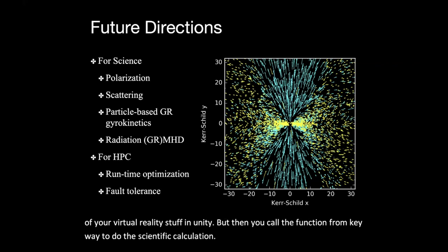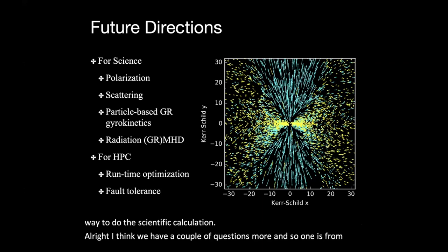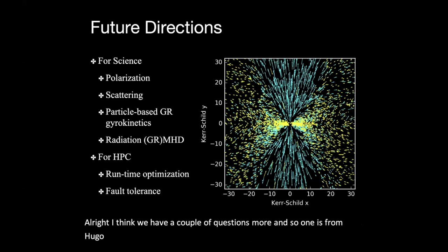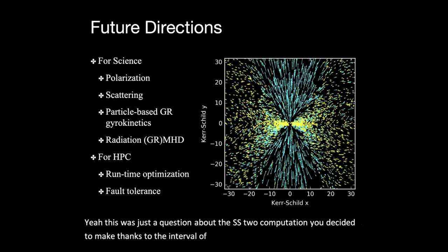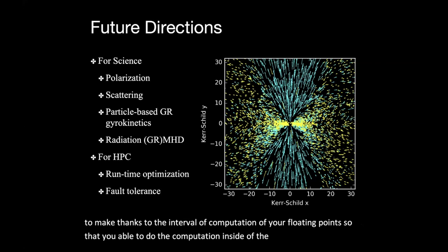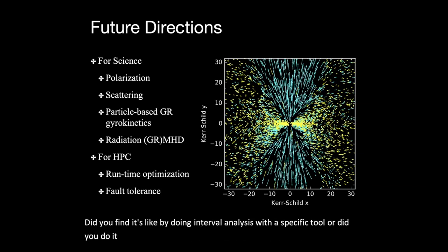All right. I think we have a couple of questions more. And so one is from Hugo. Hugo, you can unmute yourself and go ahead and ask the question. Yeah, this was just a question about the FP32 computation you decided to make, thanks to the interval of computation of your floating points. So that's, you were actually able to do the computation inside of the FP32 range. Did you find it like by doing interval analysis with a specific tool or did you do it by hand? How did you make sure that it was always in that interval for any input data?